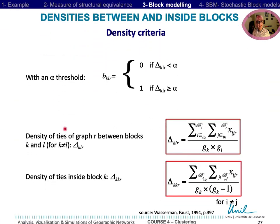Also, densities can be calculated for each couple of blocks and inside each block, and be used to assign 0 if density is low and 1 if it is high.